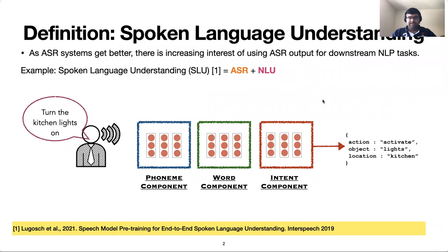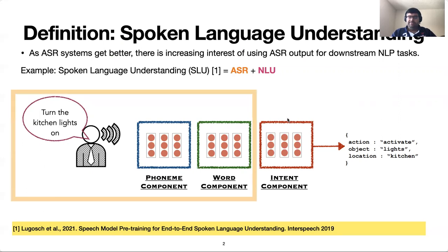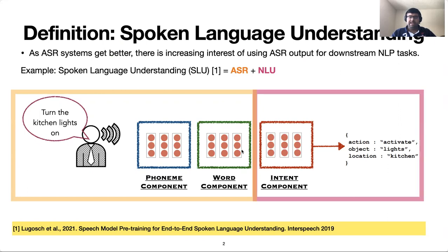As automatic speech recognition systems are getting better, there's an increasing interest in using the ASR output to perform downstream natural language processing tasks. Spoken language understanding is the task of inferring the semantic meaning of spoken utterances, and it consists of two subtasks: the first converts speech representation to words, and the second extracts the intent of the spoken utterance.